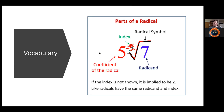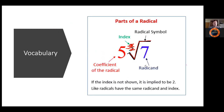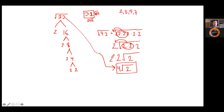Mrs. Alda confirms in the chat that Charles is right — 111 is composite and can be divided by 3 and 37, which are unusual factors. I'm now going to go ahead and post the Desmos activity for today into the chat.